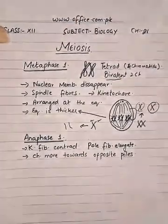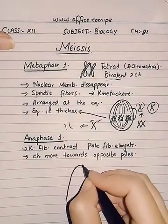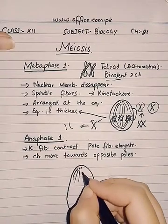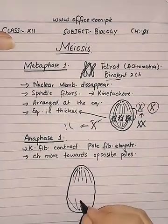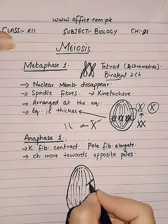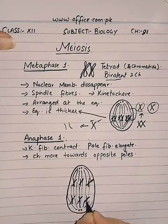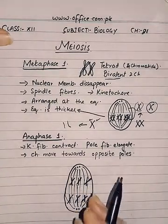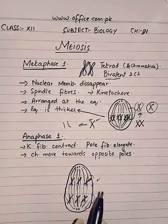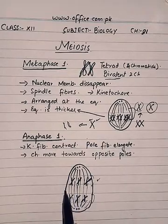Now let us see this with the help of a diagram. The cell is elongated compared to the previous stage. Here we have the centrioles; these are the kinetochore fibers which are contracting, and in between, the pole fibers are elongating. The kinetochore fibers have pulled the whole chromosome towards itself — the whole chromosome moves towards the opposite pole, whereas in mitosis the chromatids are separated.